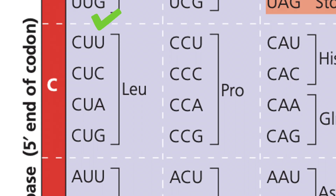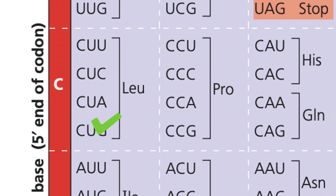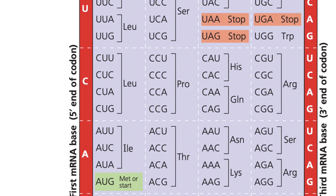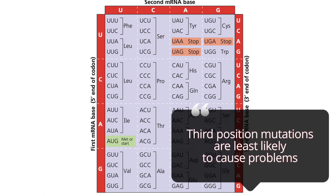What's notable here is that the mutation occurs at the third position of the triplet codon. And as you may recall from the genetic code, due to the redundancies, third-position mutations are least likely to cause any changes at all — though that's not always guaranteed.